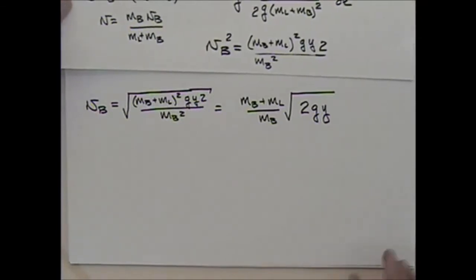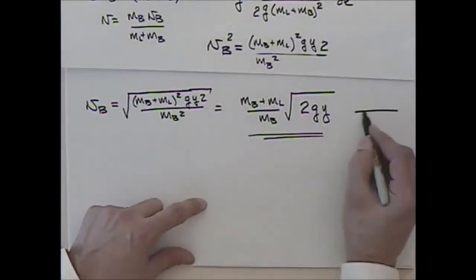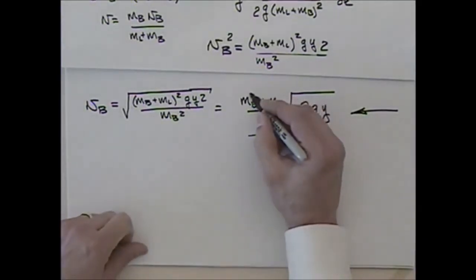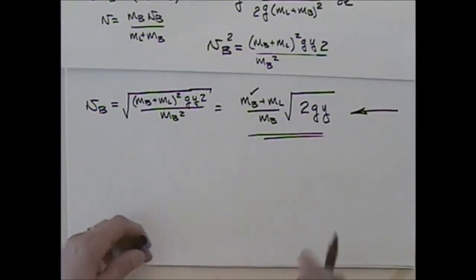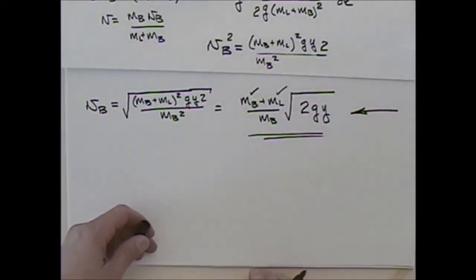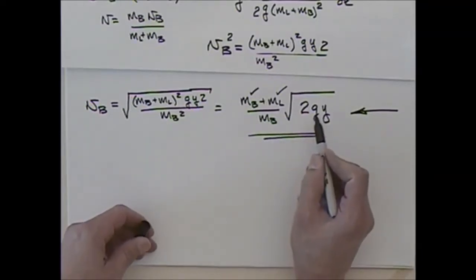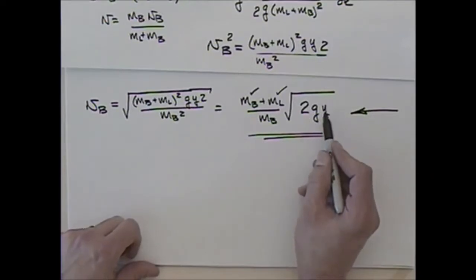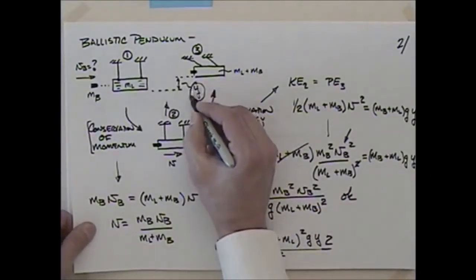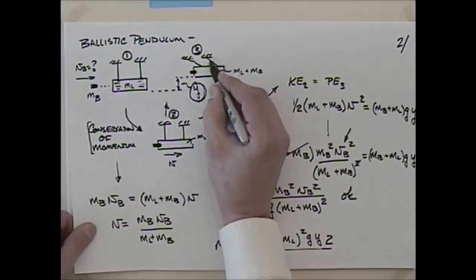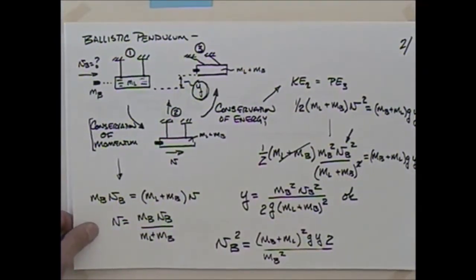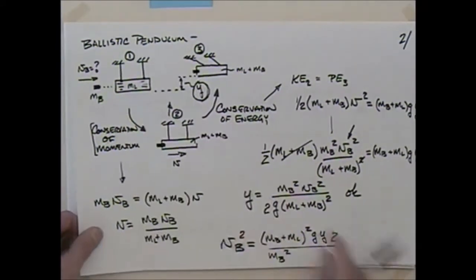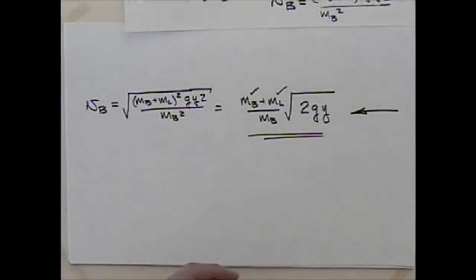Taking the square root, the velocity of the bullet equals [(M_bullet + M_log) / M_bullet] times the square root of (2 · g · Y). We get the bullet velocity by measuring the mass of the bullet — easy with an inexpensive scale — the mass of the log, g the acceleration of gravity, and Y the height the log rises. Y can be measured by videotaping the swing and slowing it down, since the log rises much more slowly than the bullet travels.